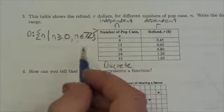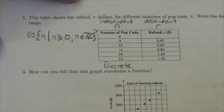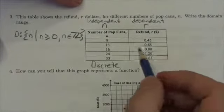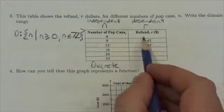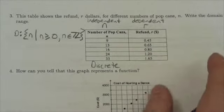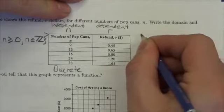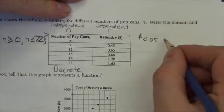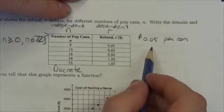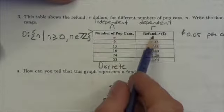So long as n is an element of the integers. Now let's take a look at range, and this is where things are going to get a little bit more complicated with this question. Notice that when I bring in nine cans I get 45 cents, 13 cans 65 cents, 16 cans 80 cents. I think you should be able to see here fairly clearly that what we're getting is 0.05 dollars per can. That's the relationship here, that's the dependence: each can is producing five cents.